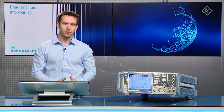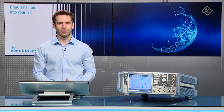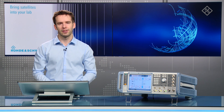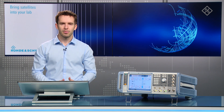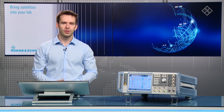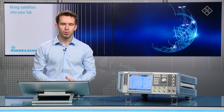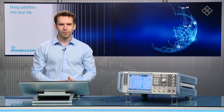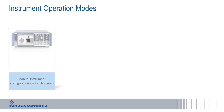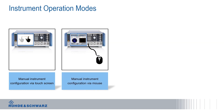First of all, you do not need to use an external computer to configure and operate the instrument. The SMW has an integrated GUI that allows you to generate GNSS scenarios quickly and easily. There are four different ways to interact with the instrument. First, the instrument can be configured manually using its large touch screen and the buttons on the side. If you'd like, instead of making use of the touch interface, you could also connect a mouse and keyboard to the SMW.